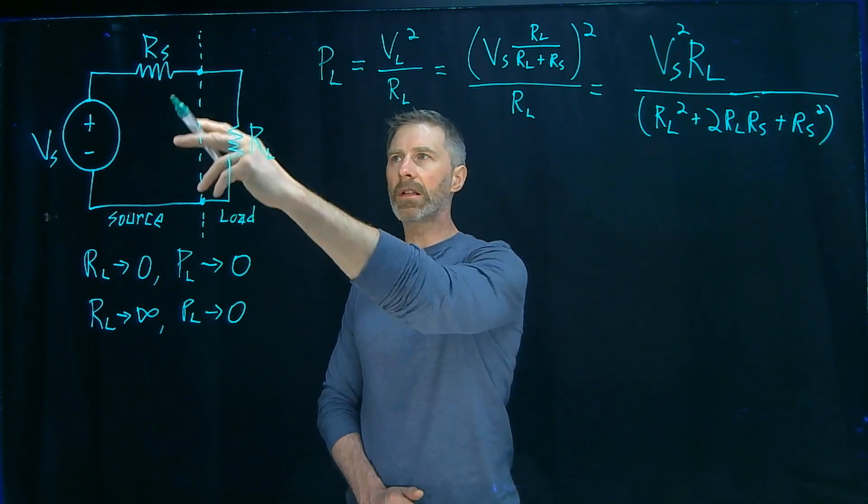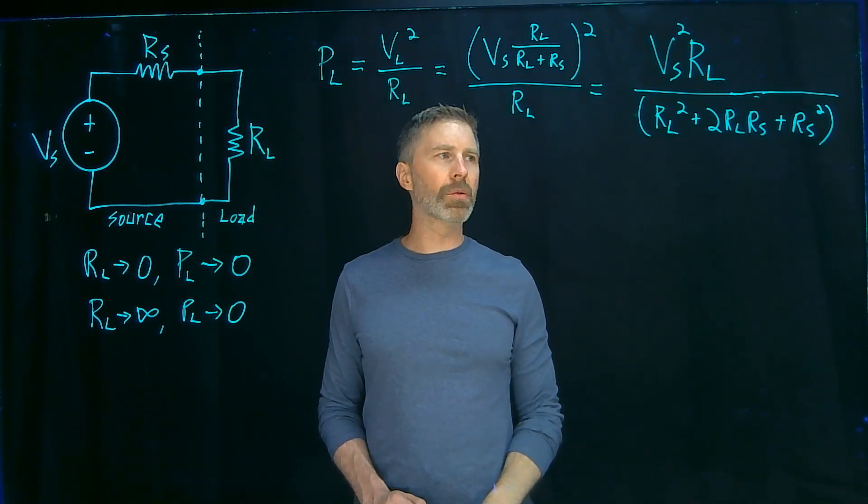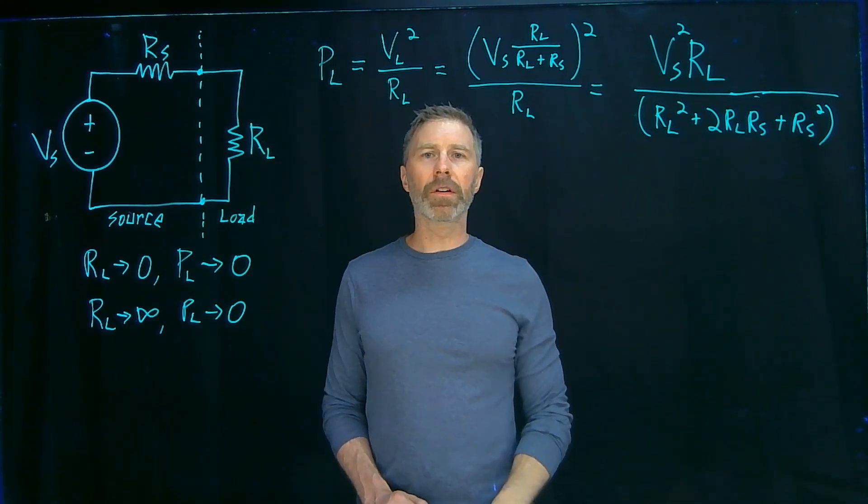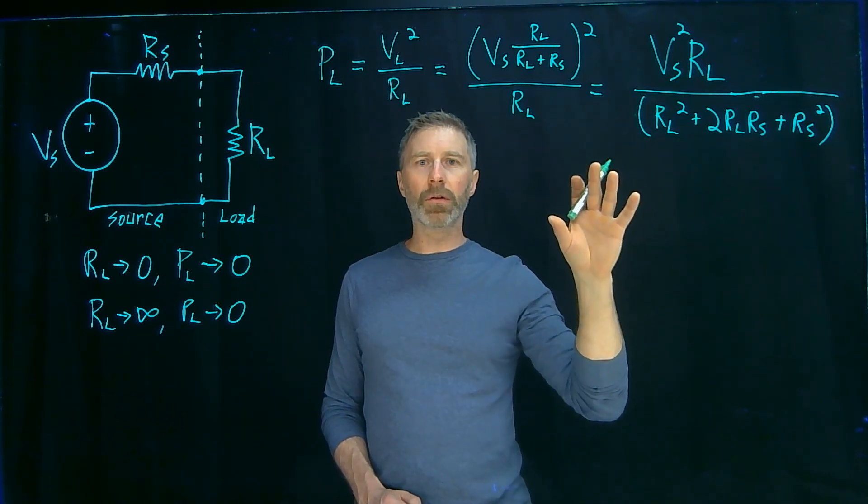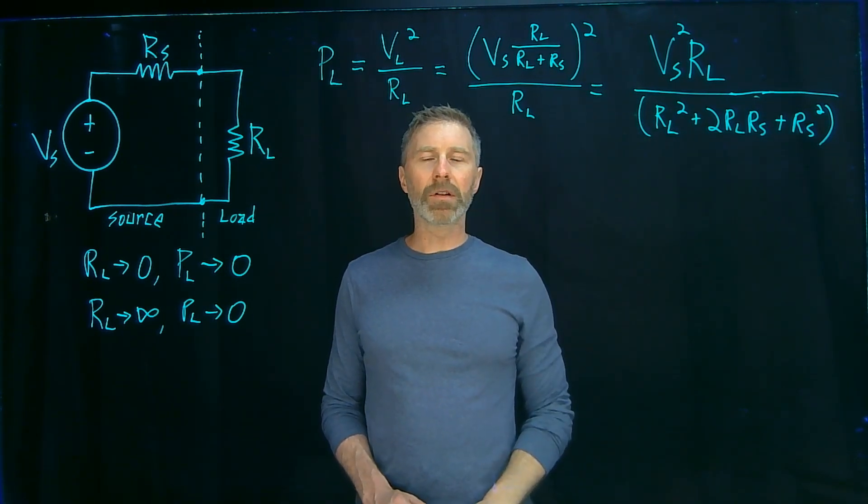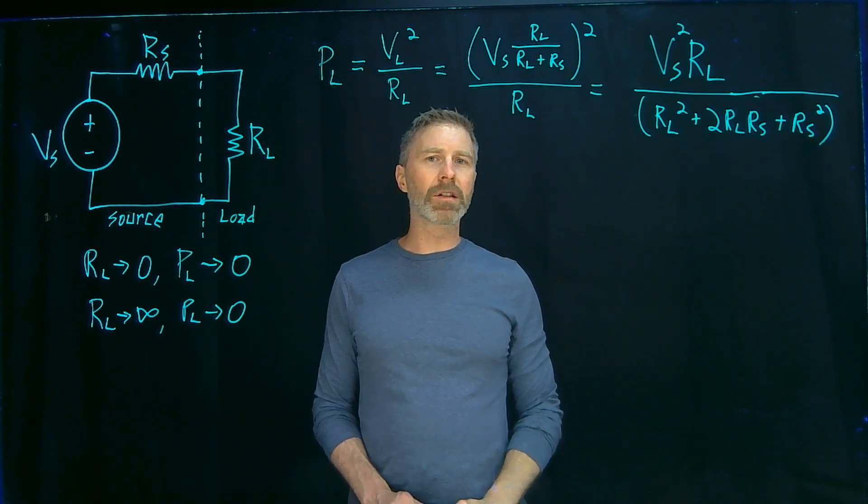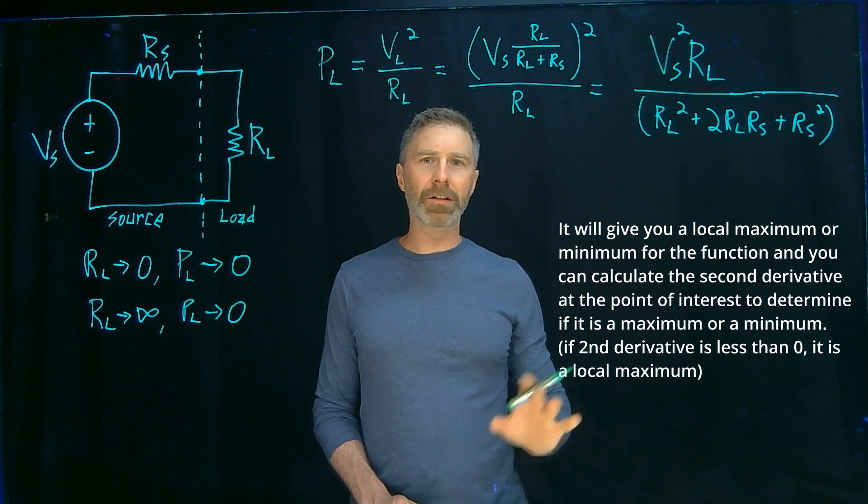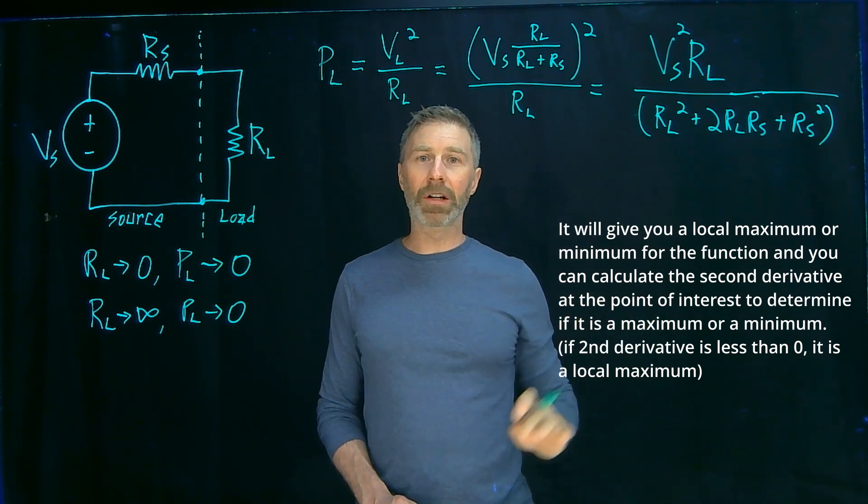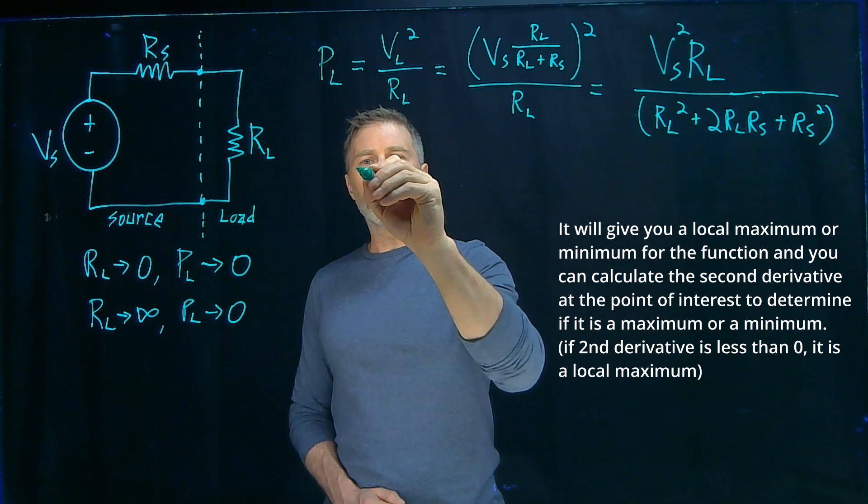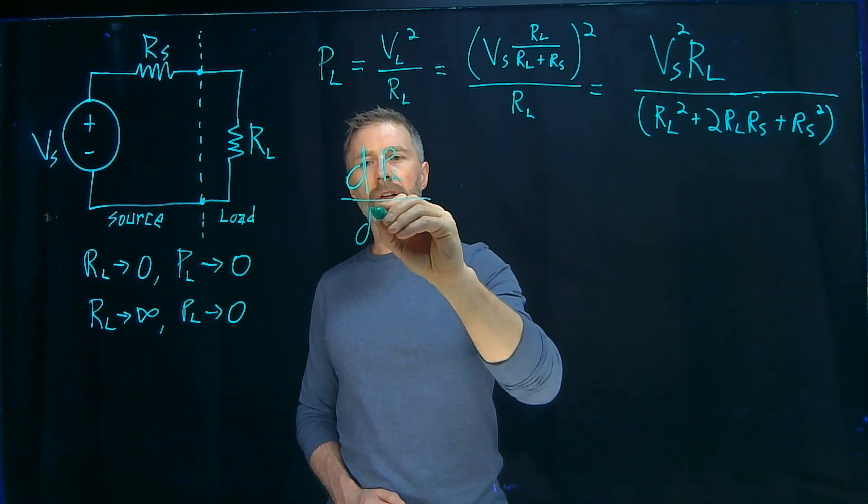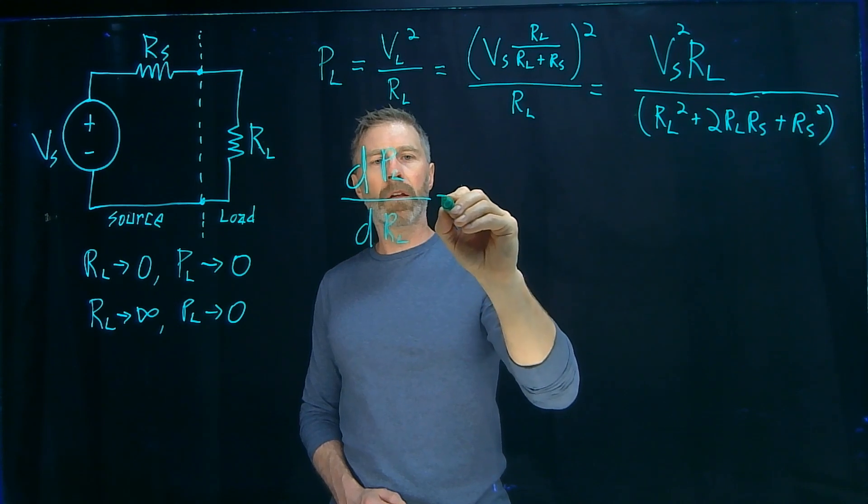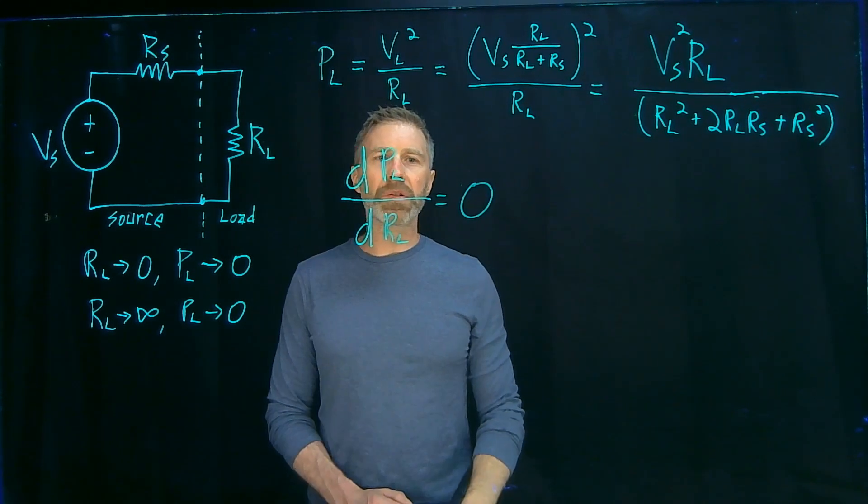Vs is a constant, that's the source voltage. RS is a constant, that's the output resistance of the source. RL is the only variable in this equation. And we have an equation. And if you remember back to calculus, if you take the first derivative of the equation and then set that value to zero, that will give you a maximum or a minimum value. And I can tell you at this point that when we do that, it's going to give us a maximum value. So basically what we want to do is find the derivative of that equation with respect to RL, and we want that to be zero.